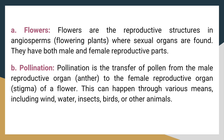Flowers. Flowers are the reproductive structures in angiosperms, flowering plants, where sexual organs are found. They have both male and female reproductive parts. Pollination. Pollination is the transfer of pollen from the male reproductive organ, anther, to the female reproductive organ, stigma, of a flower. This can happen through various means, including wind, water, insects, birds, or other animals.